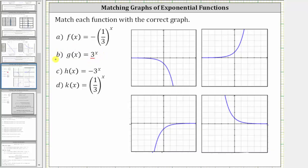Also notice how all the function values for g of x are going to be positive or greater than zero. So looking at the four graphs, notice how this is the only graph that is increasing or shows exponential growth and all the function values are greater than zero. And therefore this is the correct graph for g of x.